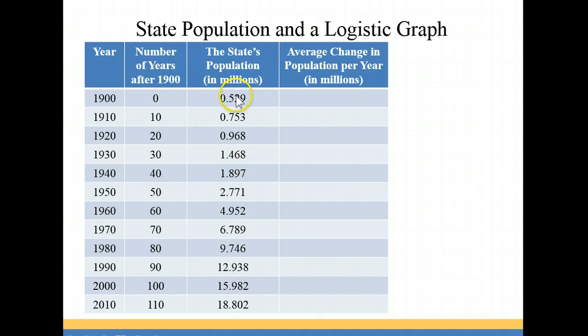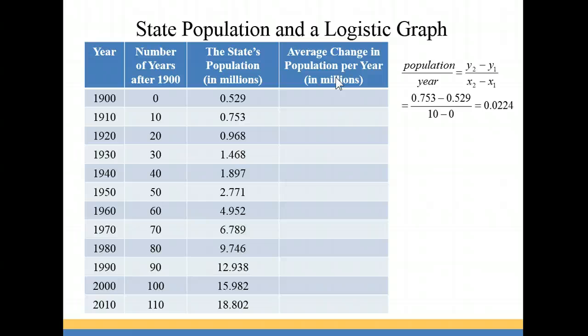So what we want to do for each one of these sets of ordered pairs, we're going to find the slope between them. So between 1910 and 1900, we want to find the slope. So it's going to be our population is our y value and our years is our x value. So you have y2 minus y1 over x2 minus x1. So we're just taking the 0.753 minus the 0.529 and dividing it by 10 minus 0. And I got 0.0224 as my slope. So that gives me the average change in population per year between 1910 and 1900 in millions. So you have to think about that as multiplying it by a million. So that would be 0.0224 times a million or 22,400 increase in population per year between 1910 and 1900.